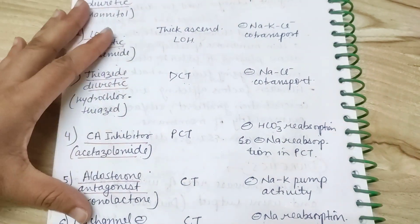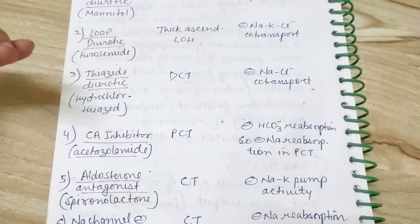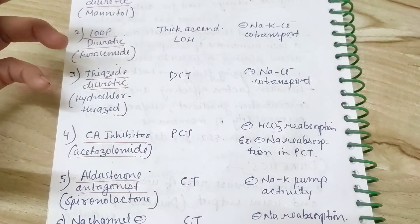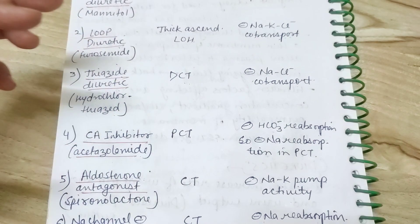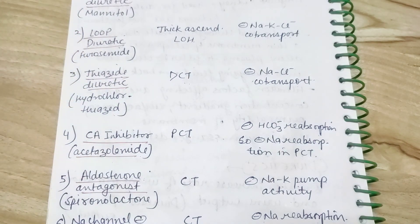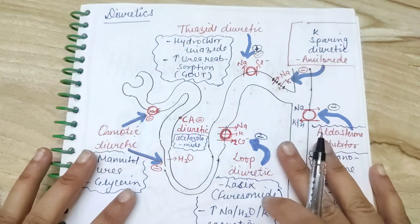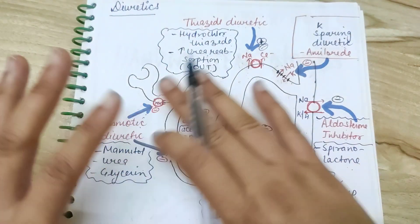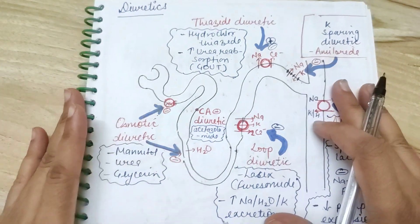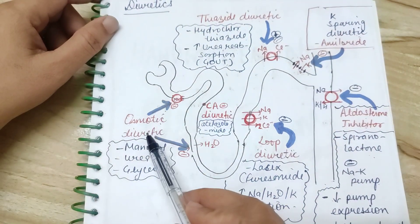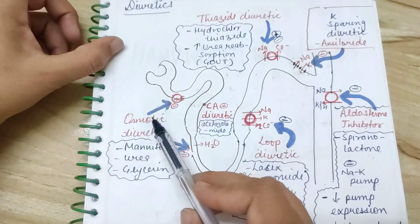Now let's see all these diuretics on a tubule diagram, showing where they are acting. Having an image of the renal tubule with all the diuretics labeled will help you remember better. So this is a renal tubule with all the labeled diuretics and wherever they are acting.